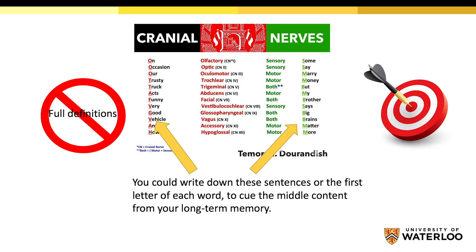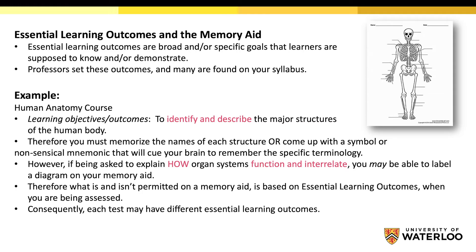Let's take a closer look at essential learning outcomes as they pertain to a memory aid. Essential learning outcomes are broad and/or specific learning goals that students are supposed to know and/or demonstrate. Professors set these outcomes and they're found on your syllabus. For example, in a human anatomy course, one of the learning objectives or outcomes is to identify and describe the major structures of the human body. Therefore, you must be able to memorize the names of each structure, or come up with a symbol or nonsensical mnemonic that will cue your brain to remember the specific terminology. However, if being asked to explain how organ systems function and interrelate, you may be able to label a diagram on your memory aid. What is and isn't permitted on a memory aid is based on essential learning outcomes when you're being assessed. Consequently, each test may have different essential learning outcomes.